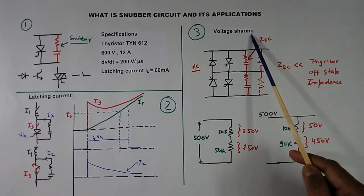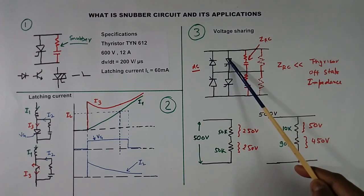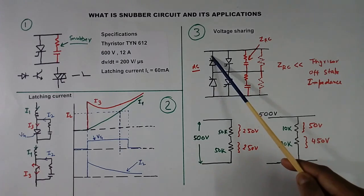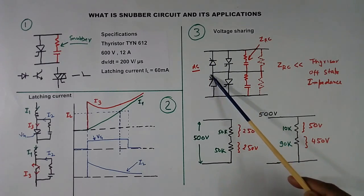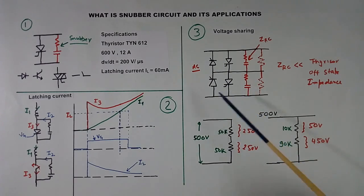Third is voltage sharing. Suppose we have 2 thyristors in series, and both are off. When thyristors are off, they will have some resistance. These resistors are shown here. Suppose we give 500V. And these 2 resistances are 50K, 50K. Then these resistances are equal. Equal voltage will come. 250V here, 250V here.